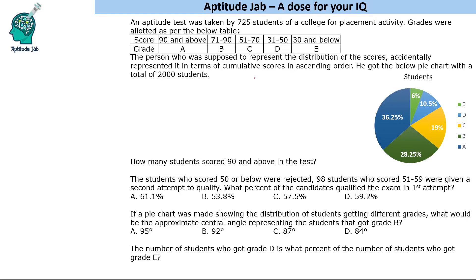Cumulative scores means in ascending order, so that means E to A. Suppose E is 10%, D is 8%. So instead of saying 8, he represented 18. Suppose C is 15%, so instead of presenting 15, he represented 18 plus 15 = 33. Like this he represented the data.